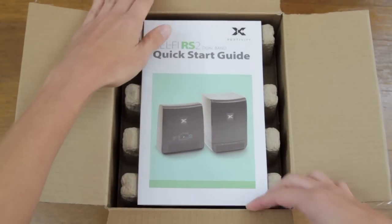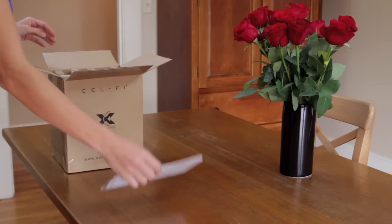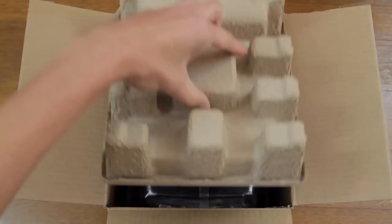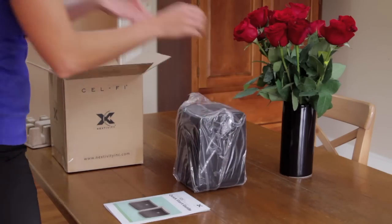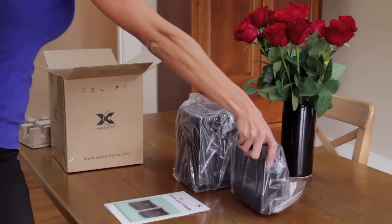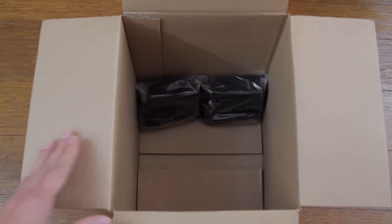Inside your box you'll find the following items: a quick start installation guide, the window unit, the coverage unit, and two power adapters.